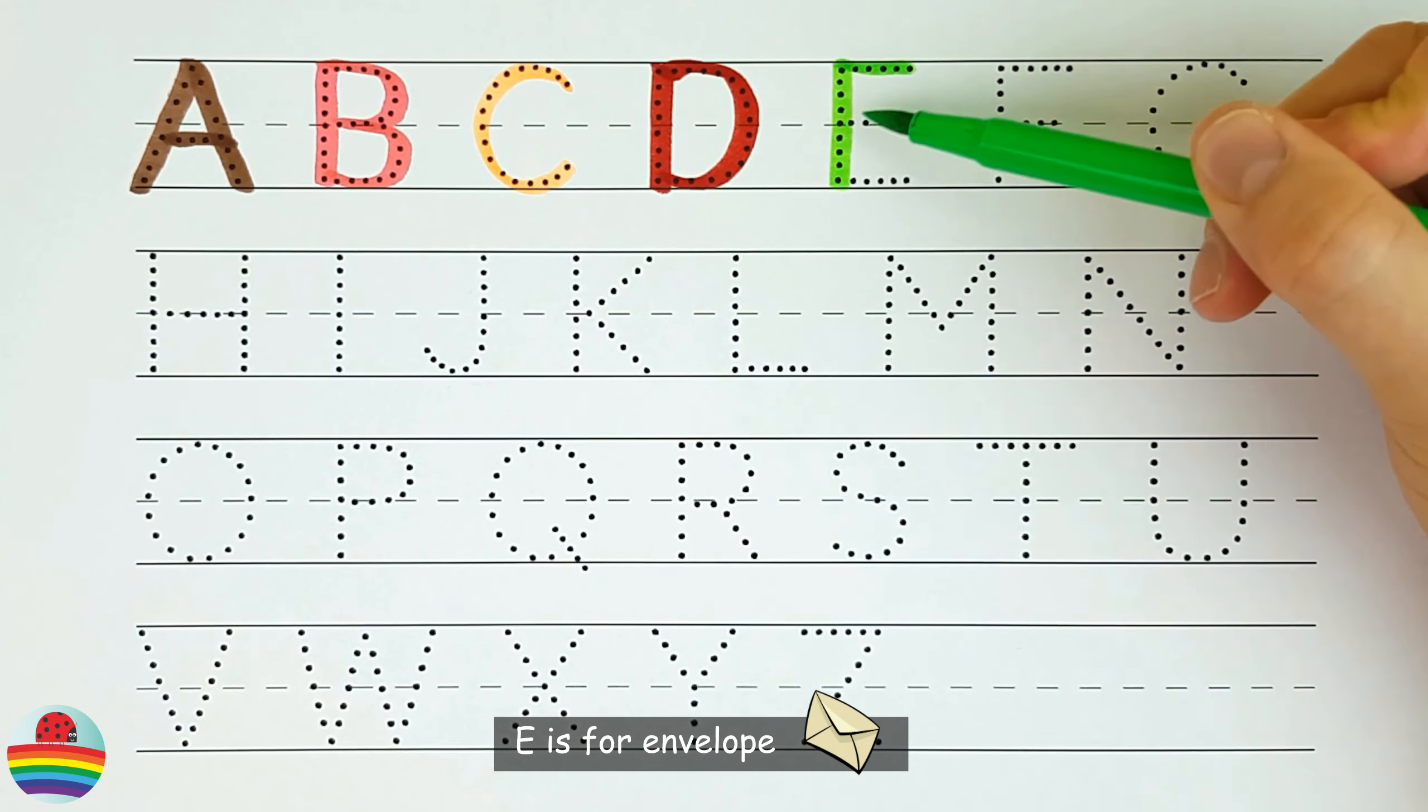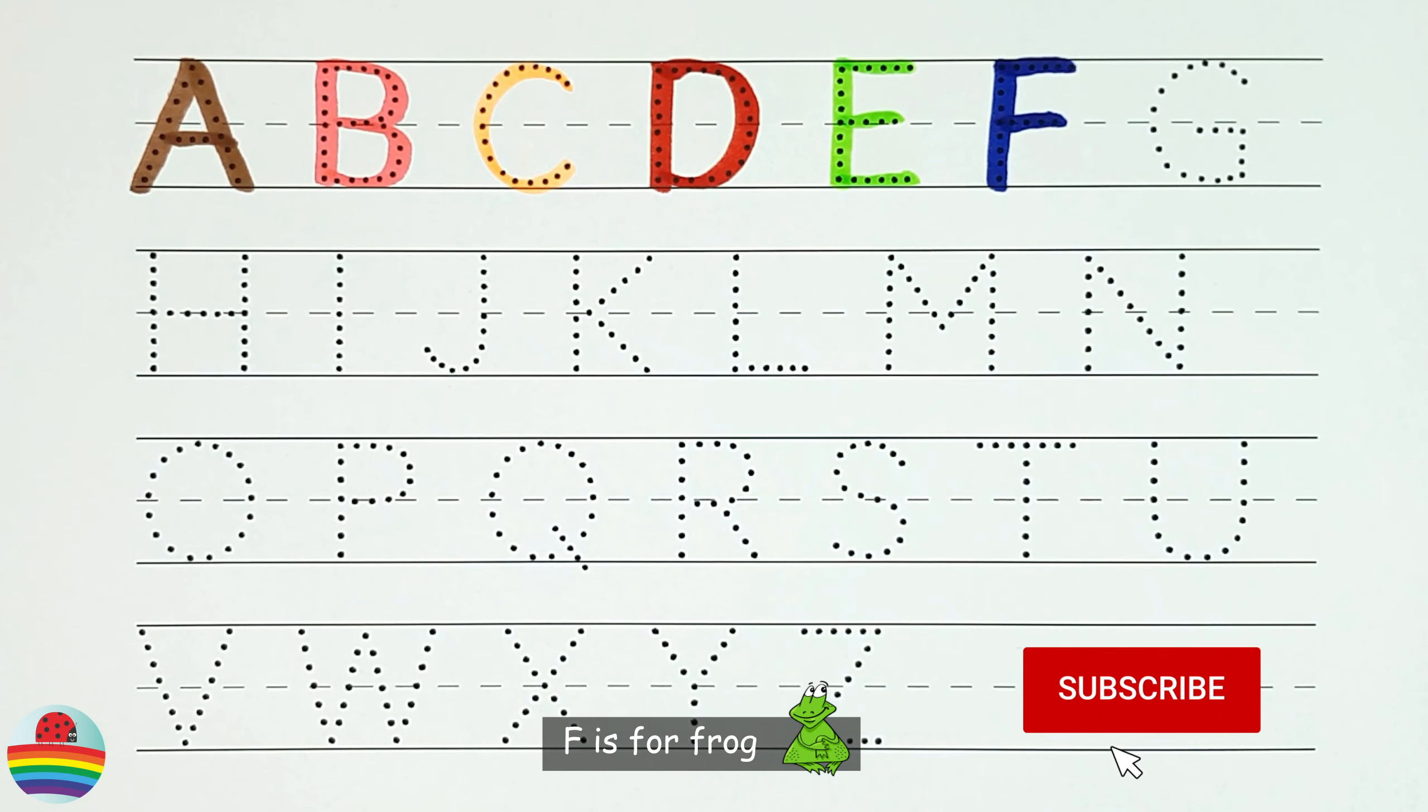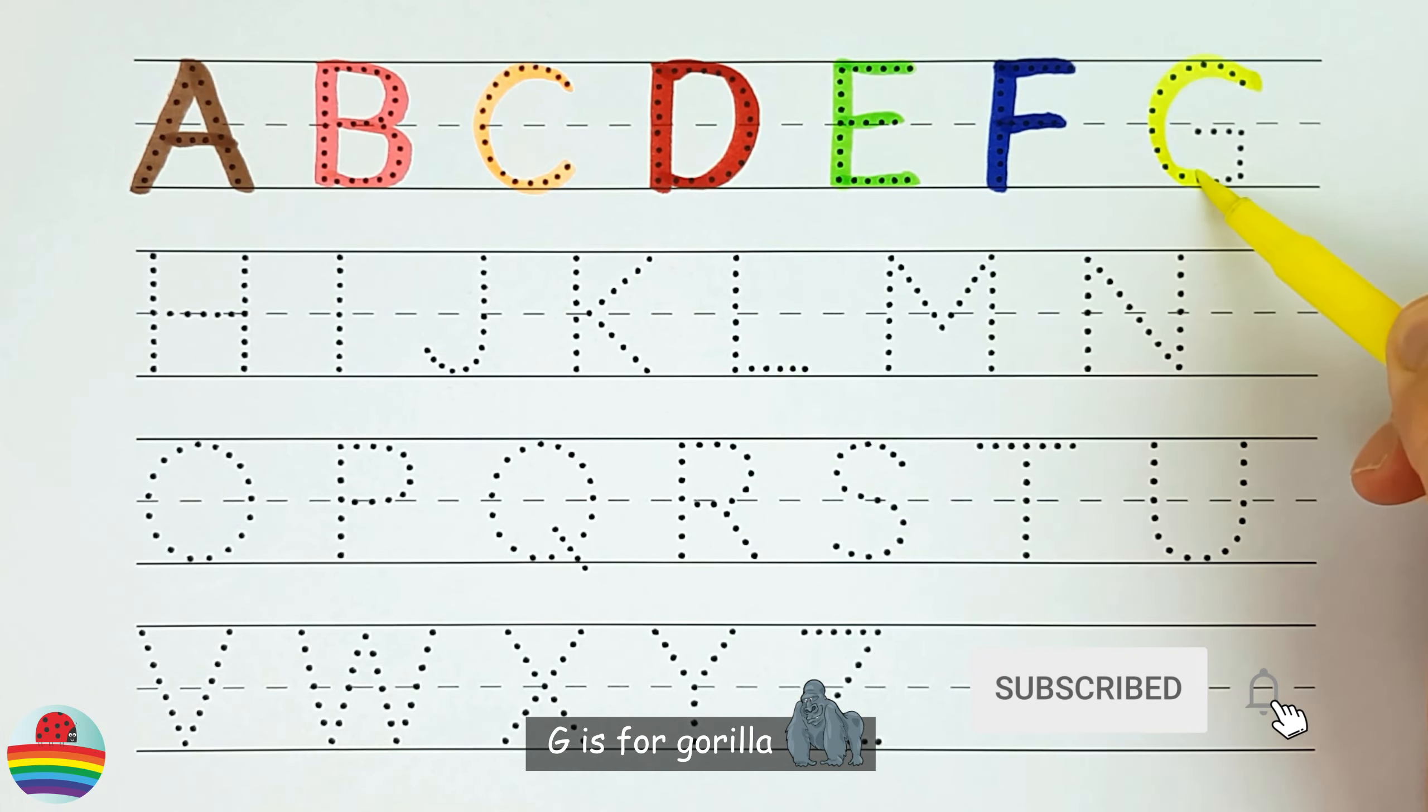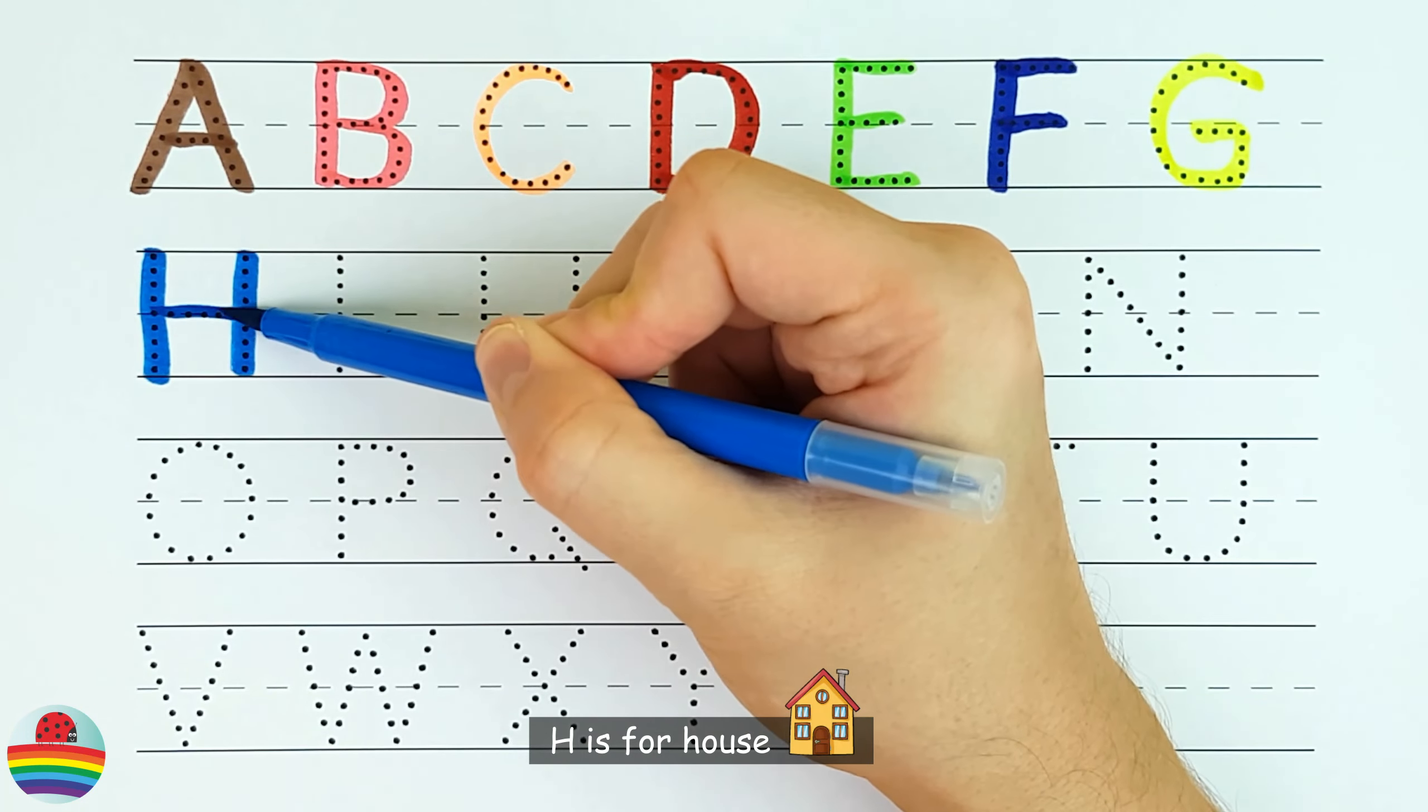E. E is for Envelope. F is for Frog. G. G is for Gorilla. H. H is for House.